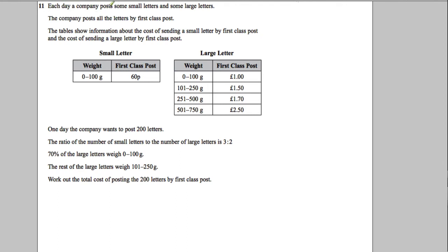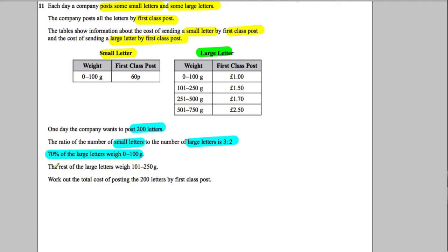In question 11, we're told each day a company posts some small letters and some large letters by first-class post. The table shows the cost of sending a small letter and a large letter by first-class post. One day the company wants to post 200 letters. The ratio of small letters to large letters is three to two, and 70% of the large letters weigh one amount and the rest weigh another. We need to work out the total cost of posting 200 letters.